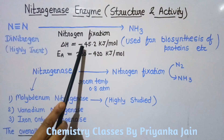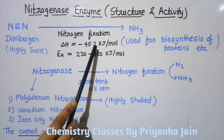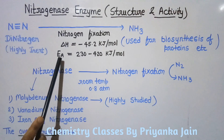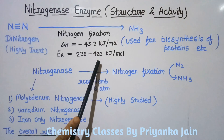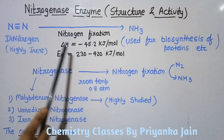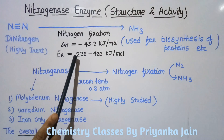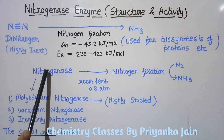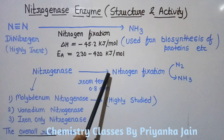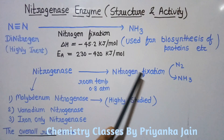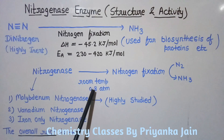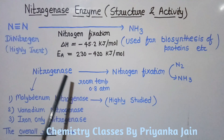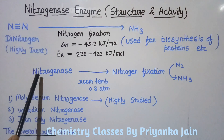This nitrogen fixation reaction involves a negative enthalpy of minus 45.2 kilojoule per mole, and the activation energy for this reaction is also very high — 230 to 420 kilojoule per mole — so this reaction cannot take place on its own. But the nitrogenase enzyme is very unique in that it can convert atmospheric nitrogen to ammonia even at room temperature and 0.8 atmospheric pressure.